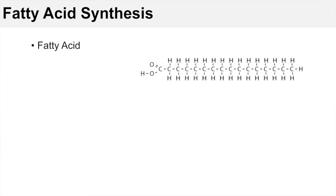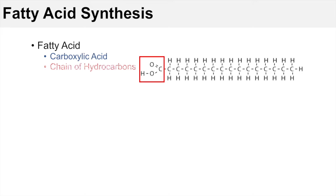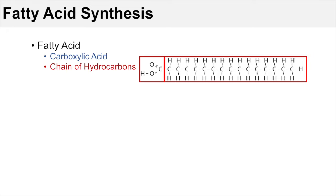So to begin, what is a fatty acid? A fatty acid, as you can see here, is a chemical structure containing a carboxylic acid chemical group as well as a chain of hydrocarbons. Because of this, it's considered amphiphilic, which means that a fatty acid has properties of both being hydrophilic and hydrophobic.